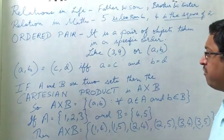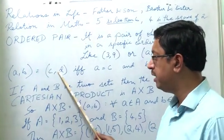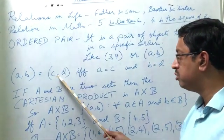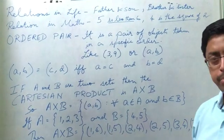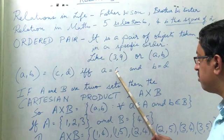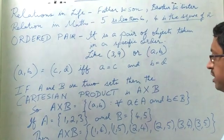Now for two ordered pairs to be equal, for example if (a,b) has to be equal to (c,d), this is possible if and only if a is equal to c and b is equal to d.